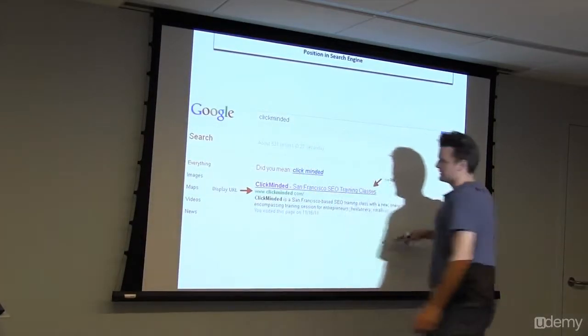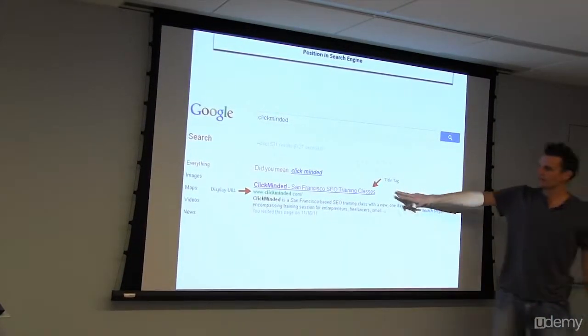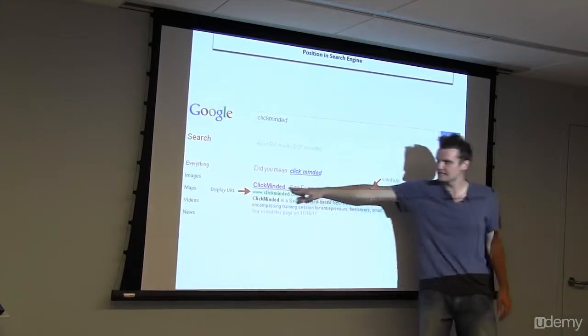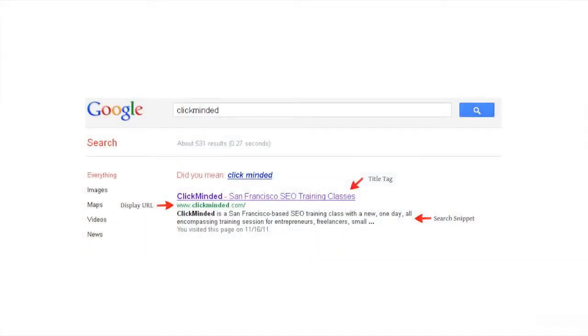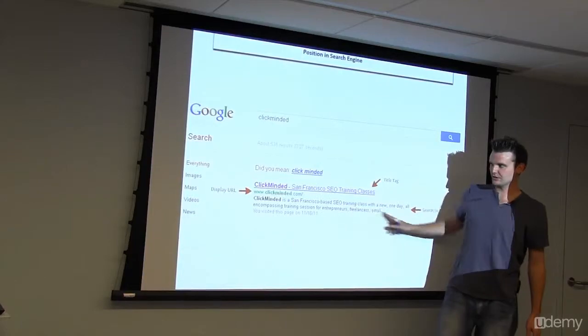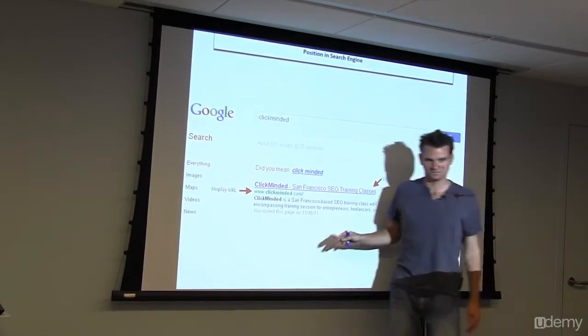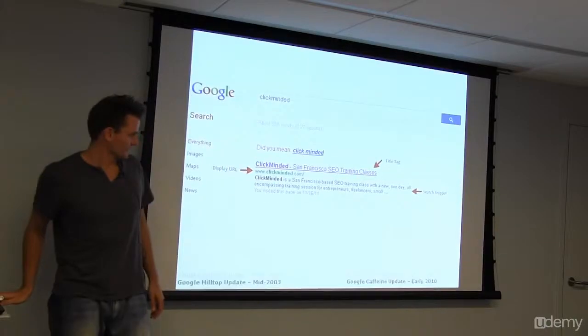So this is what we're going to be talking about when we use a lot of jargon today. When we talk about title tags, this is the search snippet we're talking about. This should be in your notes. This is the title tag, the display URL below that in green, and this is the search snippet or the meta description. Just some of the things we'll be covering today.